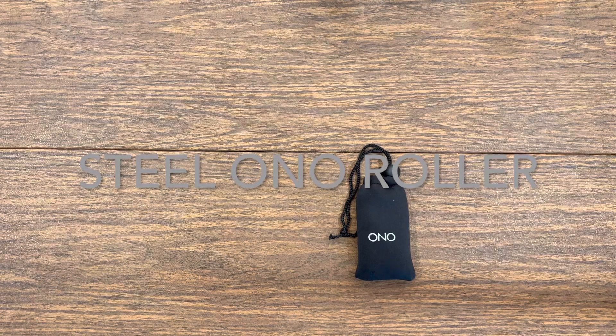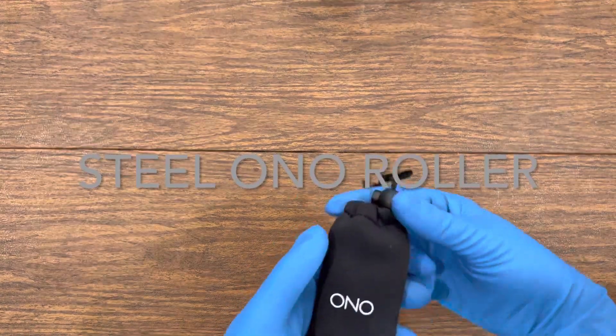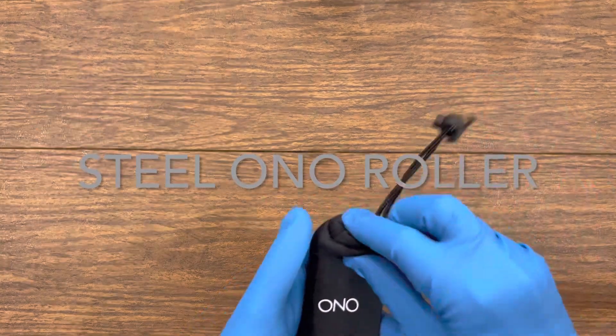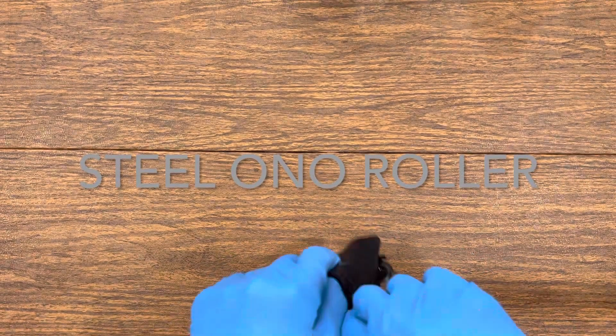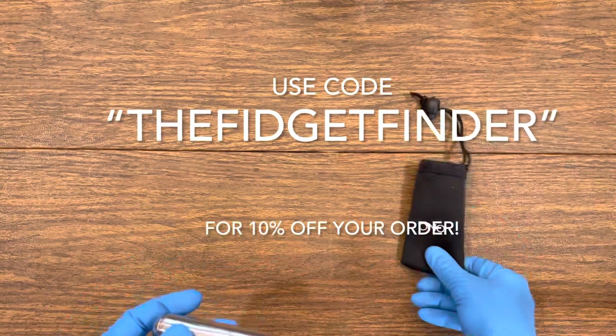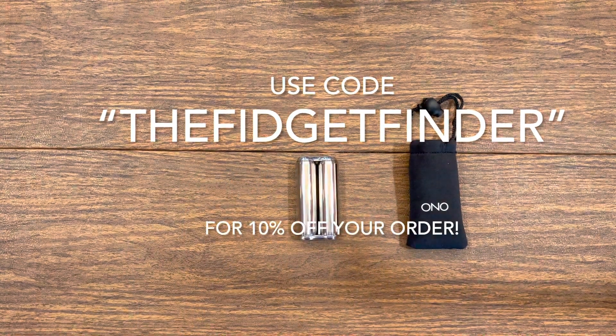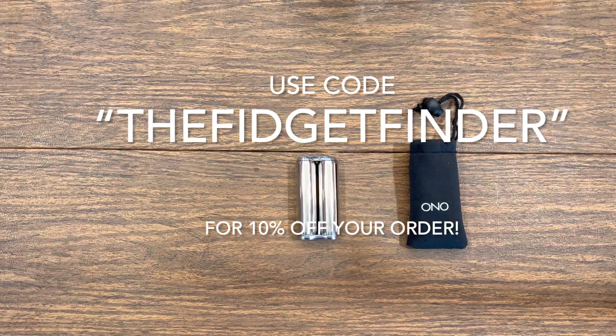Hello Fidgeters and welcome back to the Fidget Finder. Today we're looking at a steel Ono Roller manufactured by Sleek Life Design. This is an epic fidget. To get your own go to OnoRoller.com and use code THEFIDGETFINDER to get 10% off your order.